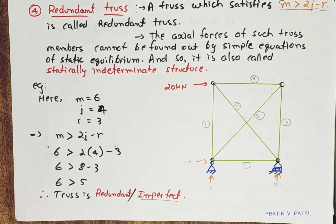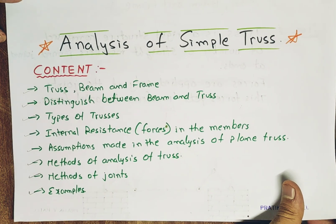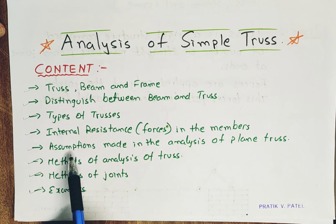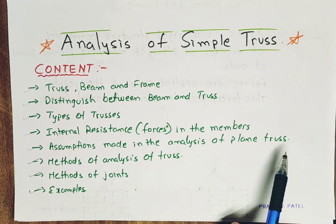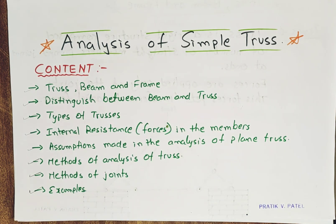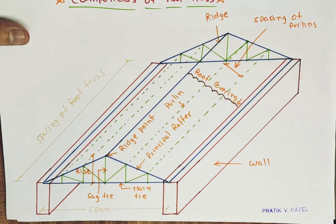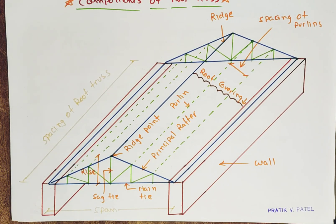This is all about the second lecture. In the third lecture, we will talk about internal resistance in the members, assumptions made in the analysis of the plane truss, and we will also understand the components of a roof truss. Let us terminate this session and continue in the next lecture. Thank you.